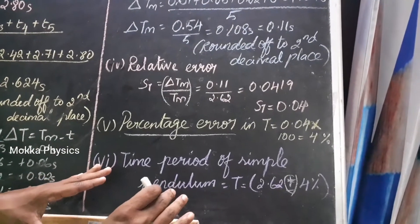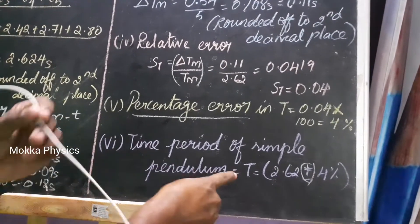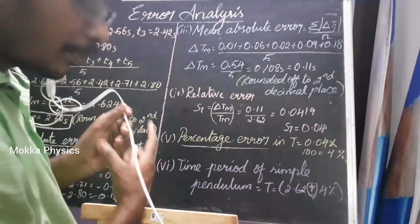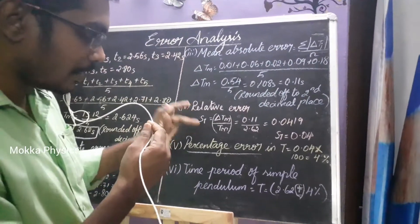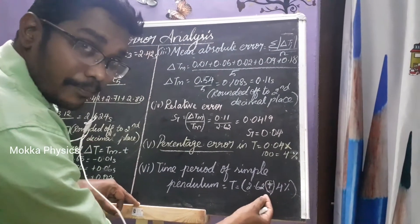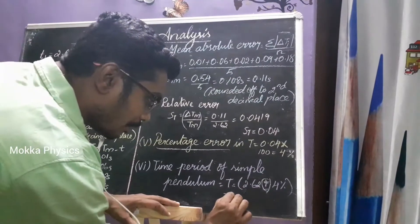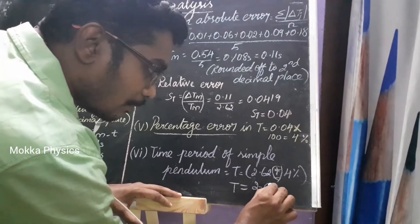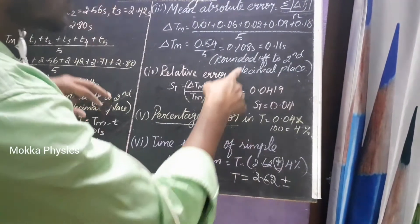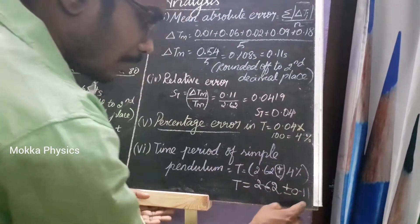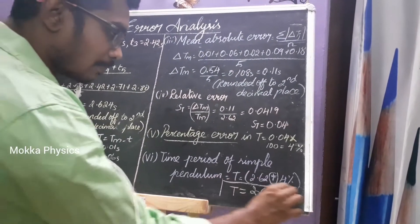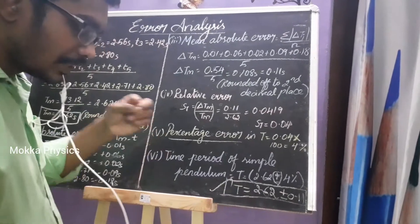So the final answer is expressed as the true value. That covers the 4 steps: absolute error, mean absolute error, relative error, and percentage error. The final answer is 2.62 plus or minus 0.11. This is the correct method of expressing an answer.